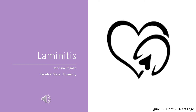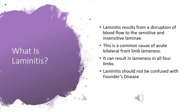This is a presentation on laminitis for an equine emergency and critical care class at Tarleton State University, authored by Medina Regalia LVT. Laminitis results from the disruption — which can be constant, intermittent, or short-term — of the blood flow to the sensitive and insensitive laminae of the hoof. It is a very common cause of acute bilateral front limb lameness in most horses, and can result in lameness in all four limbs.